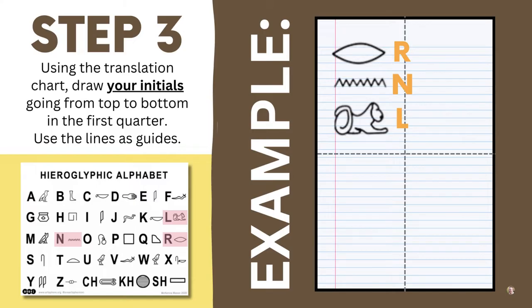Step three is to write the actual hieroglyphs. You're going to take your initials and write them from top to bottom in the upper left-hand side. My initials here are R, N, L, and I use the translation sheet to write them from top to bottom.